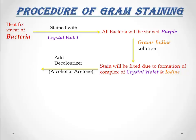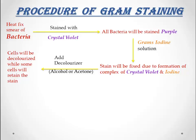The third step is the addition of a decolorizer such as alcohol or acetone. By adding the decolorizer, some cells will be decolorized while some cells will retain the crystal violet stain. The last step is the application of a counter stain, that is safranin. The cells that were decolorized will take up the color of safranin and appear pink or red in color.